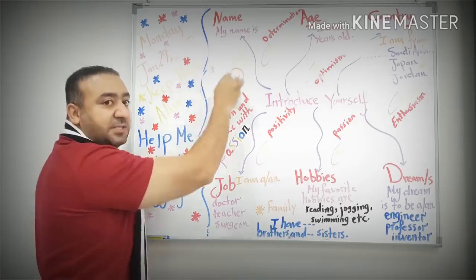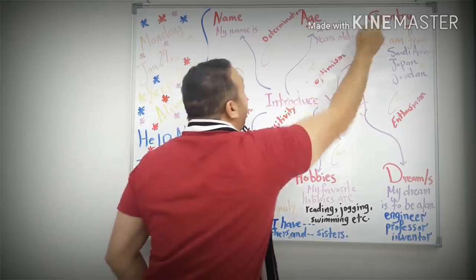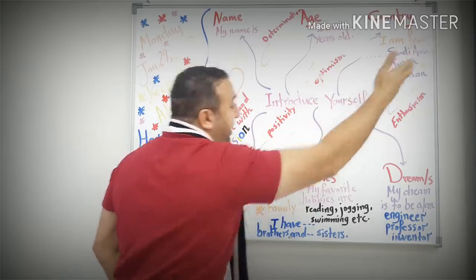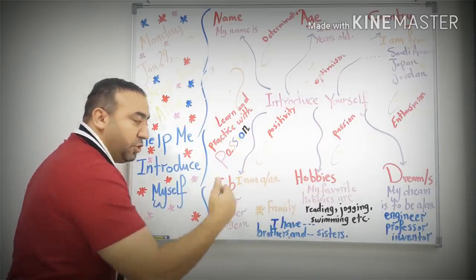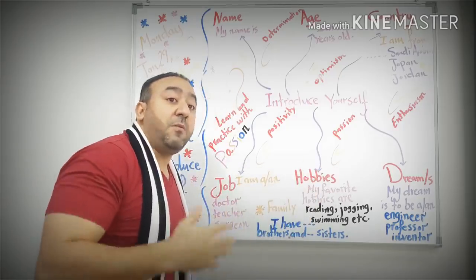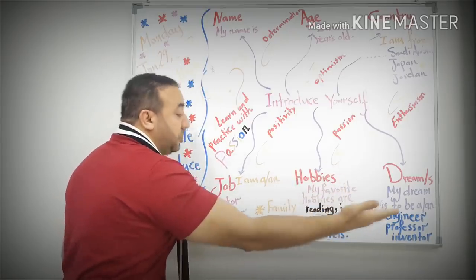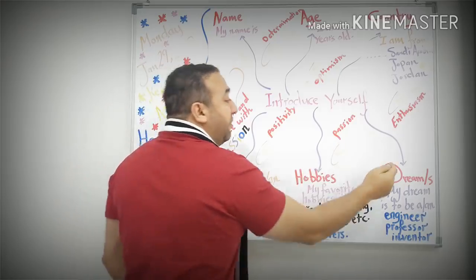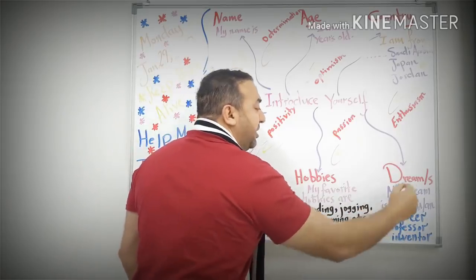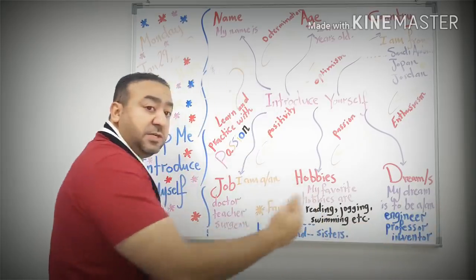Number one: your name. You can say, 'My name is...' Then, the age: 'I am 15 years old, 16 years old,' etc. Then, the country: 'I am from Japan, Saudi Arabia, Jordan, Palestine,' etc. Then, the job: 'I am a teacher, I am an engineer, I am a scientist.' After that, you can tell us some information about your favorite hobbies. You can say, 'My favorite hobbies are reading, jogging, swimming,' etc. And finally, you finish your introduction with your dream or dreams. You can say, 'My dream is to be an engineer, a professor, an inventor, a biologist,' and so on and so forth.